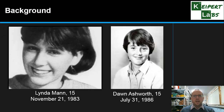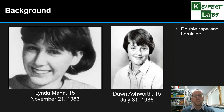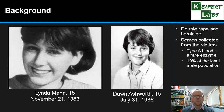We had Linda Mann and Dawn Ashworth, both 15-year-old girls who were raped and murdered — Linda Mann in 1983 and Dawn Ashworth in 1986, just less than three years later. Based on the cause and manner of death, they suspected it was the same perpetrator.